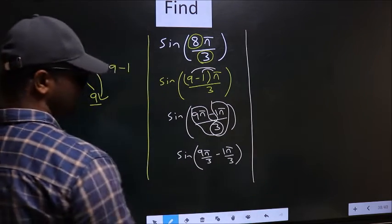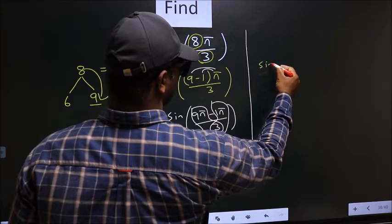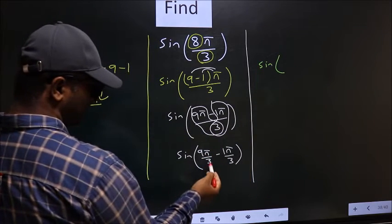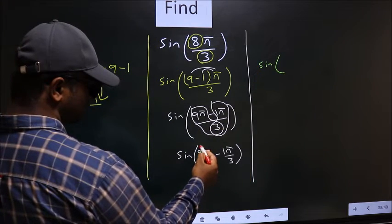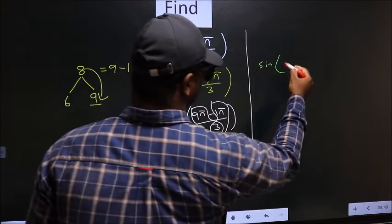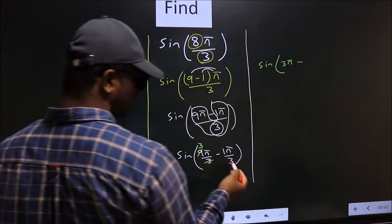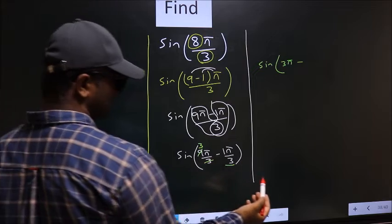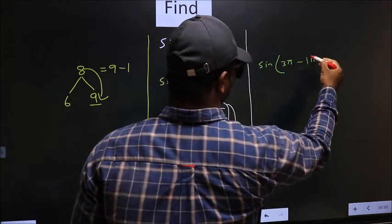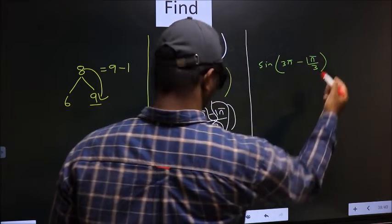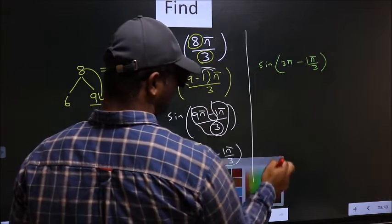That is sin(9π/3): 9 is 3 ones, 3 threes. So you get 3π minus, here this will remain like that only.